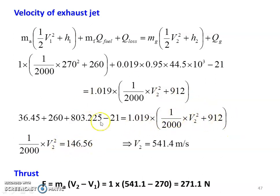After rearranging and solving, V2 equals 541.1 meters per second. Thrust force F equals mass of air into V2 minus V1, which is 1 times 541.1 minus 270, equals 271.1 Newtons. That is the thrust force of the jet engine.